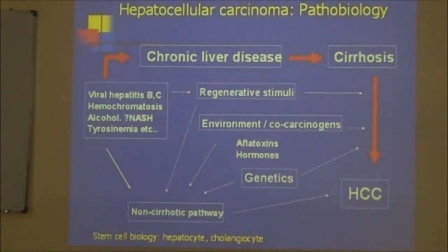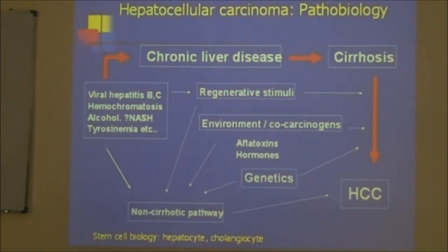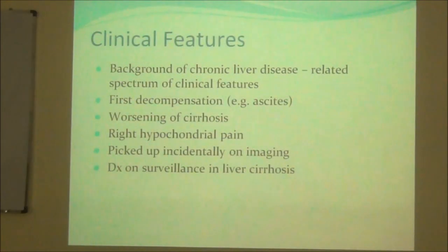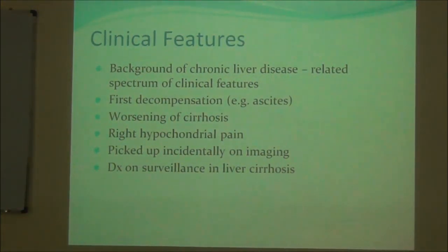They develop chronic liver disease and eventually cirrhosis, and in the cirrhotic liver tissue they go on to develop hepatocellular carcinoma. However, there are some patients who develop hepatocellular carcinoma without first developing cirrhosis — especially patients with hepatitis B and hemochromatosis. So cirrhosis is not mandatory for development of hepatocellular carcinoma, but it is the commonest background disease.